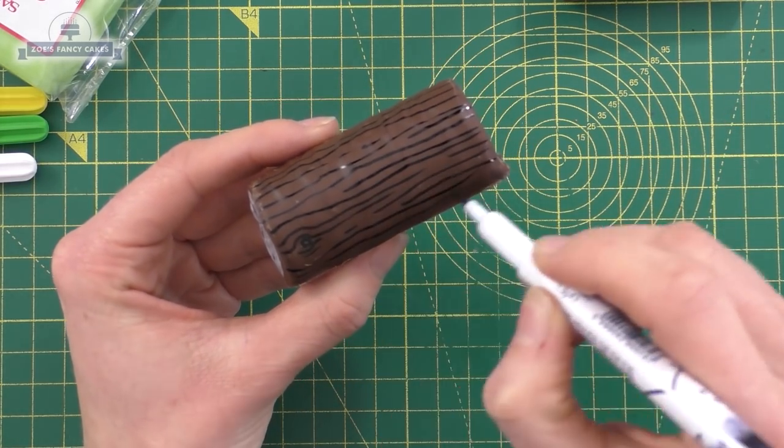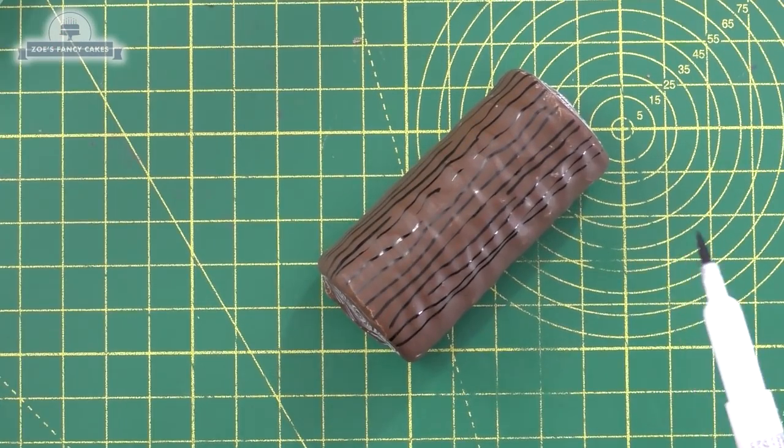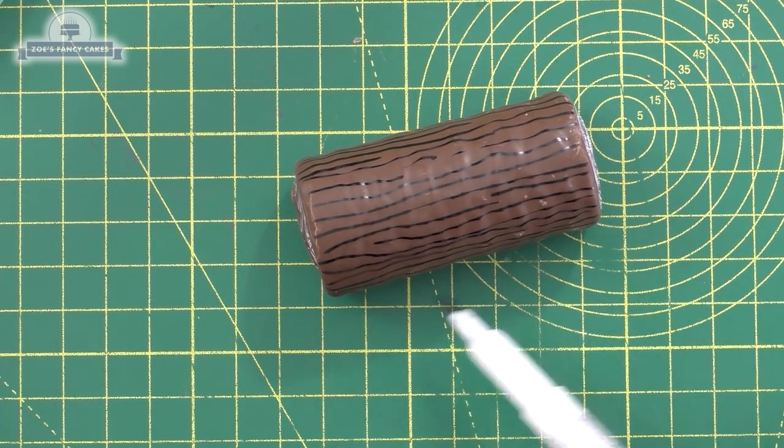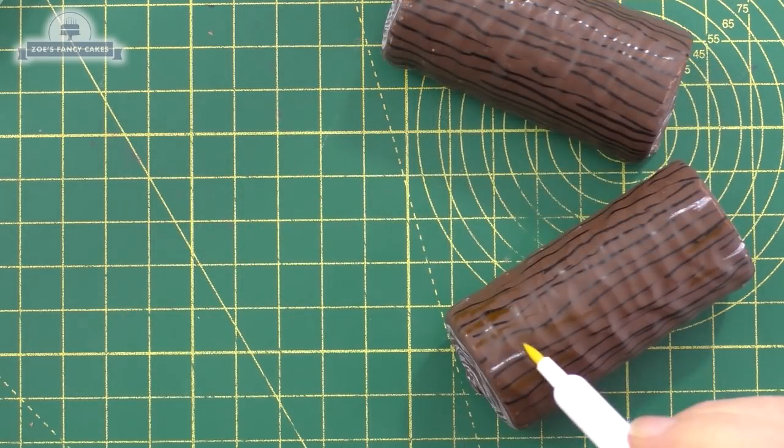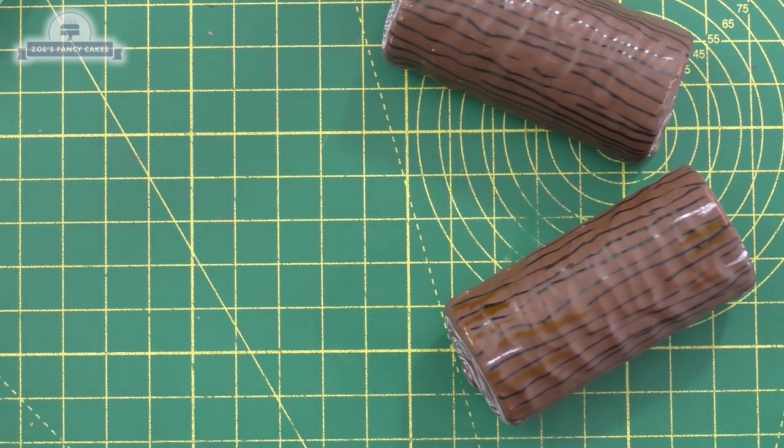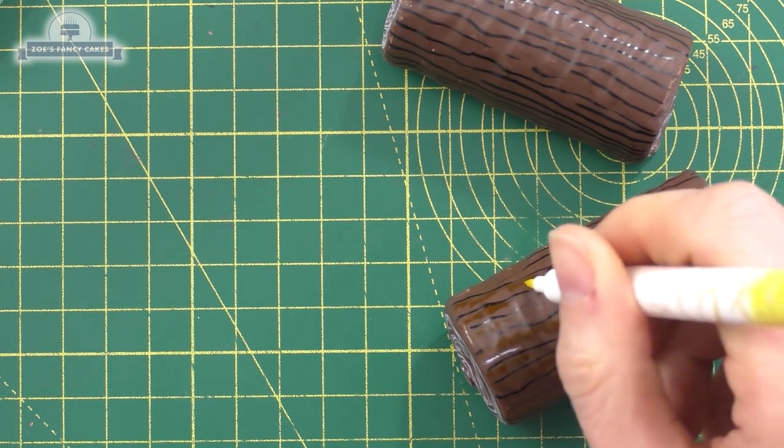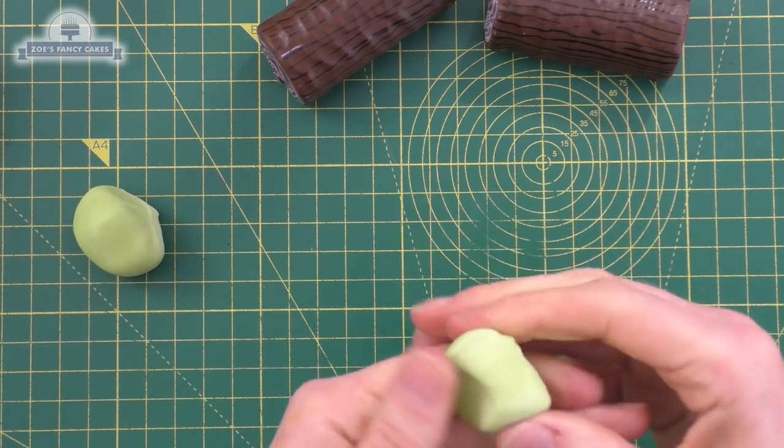Once you've covered the chocolate log in these lines - remember it's an edible pen - let it dry. I tried highlighting some bits in yellow, but once it dried it didn't show up much, so I wouldn't bother with the yellow if you're repeating it. I'll put links in the description box below to the pens and anything I've used in the video.